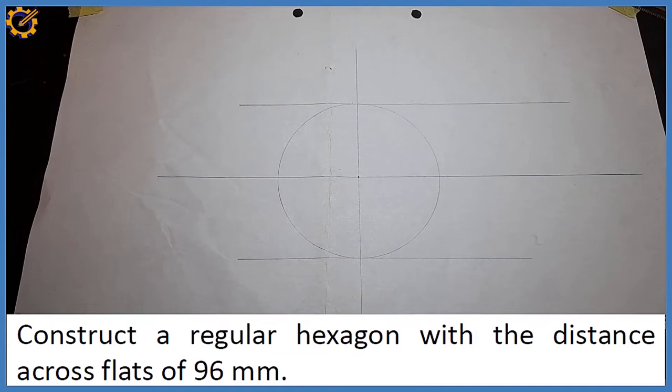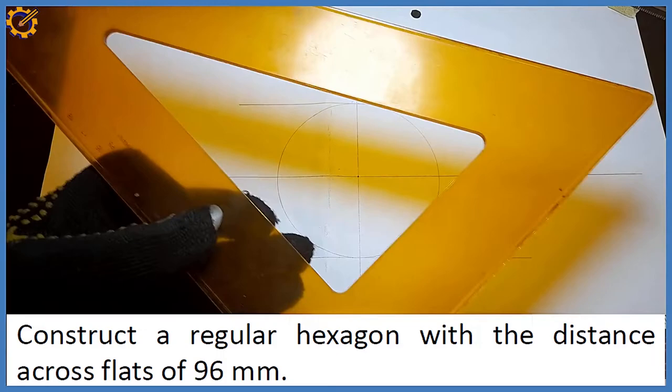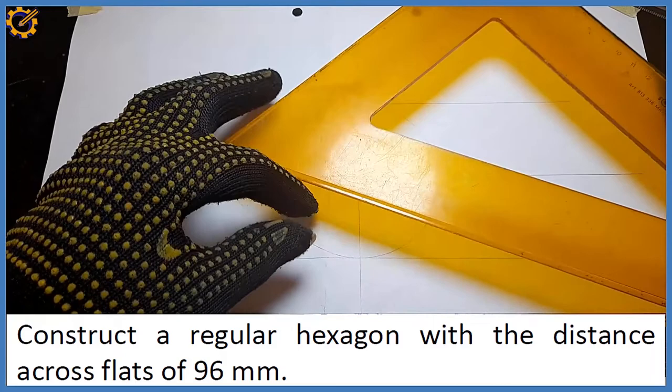Then after this, what is the next procedure? I'm going to pick my set square. Since I'm producing a hexagon, each of the angles will be 60 degrees. This set square is called the 60 by 30 degree set square. This shorter side is 30 degrees, while anything I draw from this longer part is 60 degrees.